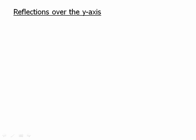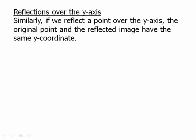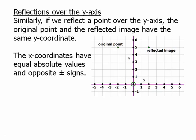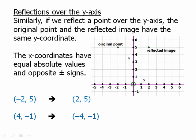Now reflections over the y-axis — same idea really. If we reflect a point over the y-axis, the original point and the reflected point have the same y-coordinate; they lie on the same horizontal line. The x-coordinates have equal absolute values and opposite signs. So if we have a negative x value it becomes positive, and if we have a positive x value it becomes negative. For example, (−2, 5) is the reflection of (2, 5), and (2, 5) is the reflection of (−2, 5).